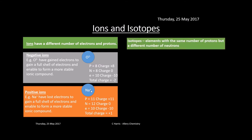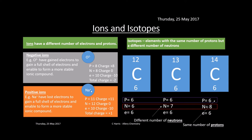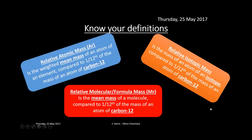Isotopes are elements with the same number of protons but a different number of neutrons. For example, there are three carbon isotopes — carbon-12, carbon-13, and carbon-14 — all with six protons (same proton number at the bottom) but different numbers of neutrons, as the mass numbers go 12, 13, 14.